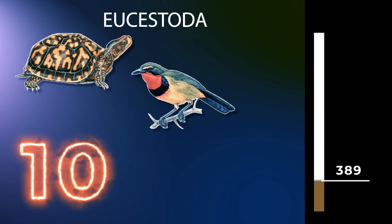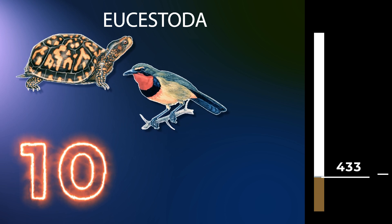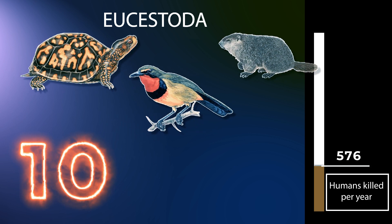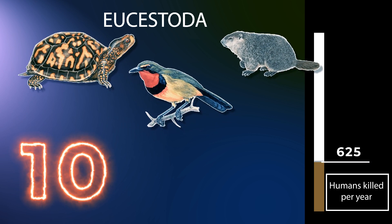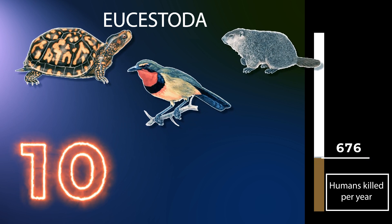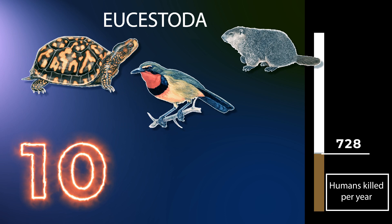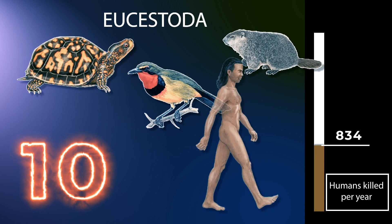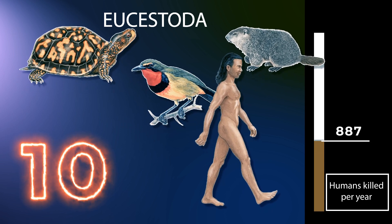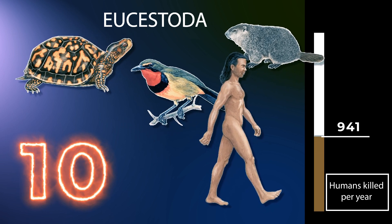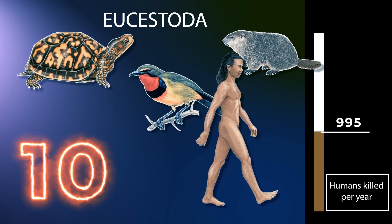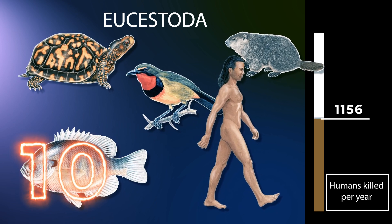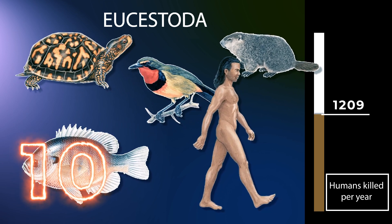All tapeworms are endoparasites of vertebrates, living in the digestive tract or related ducts. Examples are the pork tapeworm Taenia solium, with a human definitive host and pigs as the secondary host, and Moniezia expansa, the definitive hosts of which are ruminants.